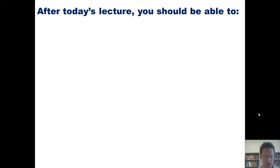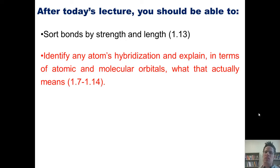Before vaulting into today's material, let's take a look at the things that you should be able to do after this lecture is done. One, sort bonds by strength and length. And two, identify any atom's hybridization and explain, in terms of atomic and molecular orbitals, what that actually means.